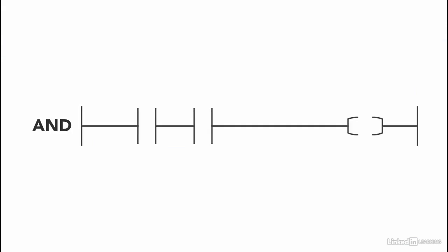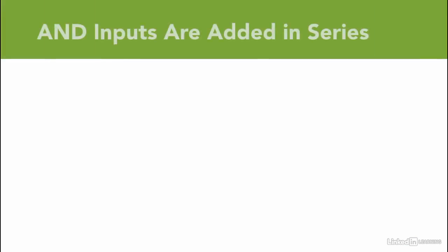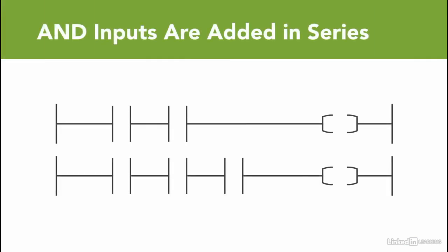If you have multiple inputs that you need them all to be on in order to activate a certain output, then use AND. AND inputs are added in series, just two or more normal instructions side by side.